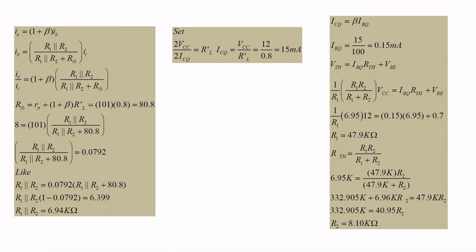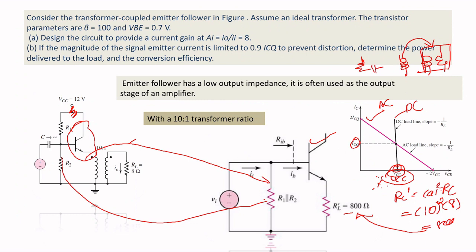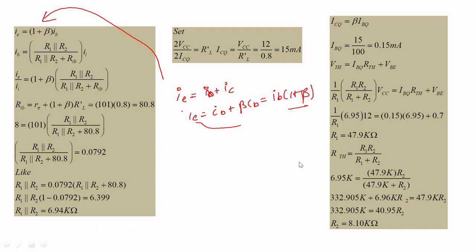To analyze the circuit, IE = IB + IC. Since IC = β × IB, we get IE = (1 + β) × IB. Applying the current divider rule to find IB: IB = [R1 ∥ R2 / (R1 ∥ R2 + R_ib)] × source current.